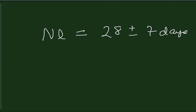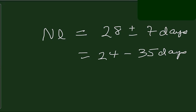A normal cycle length, in most textbooks you will see 28 plus or minus 7 days. In some textbooks you will see 24 to 35 days as considered normal, so just be aware of that.